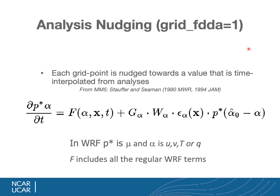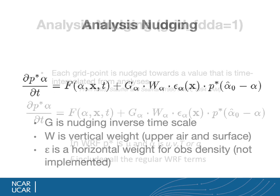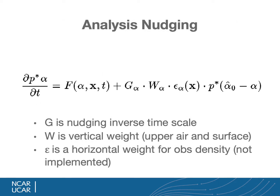Analysis nudging is activated by setting grid FDDA equals 1. Each grid point is nudged towards a value that is time interpolated from the analysis. The equation includes the nudging term where P-star is a weighting function for the mass in the column (like mu in WRF), plus the regular forcing terms F, plus the nudging relaxation term. Here alpha-zero is the analysis you want to nudge towards and alpha is the model variable. G is the inverse time scale, W is a vertical weighting function varying between 1 and 0, and epsilon is a horizontal weight that is not typically used.